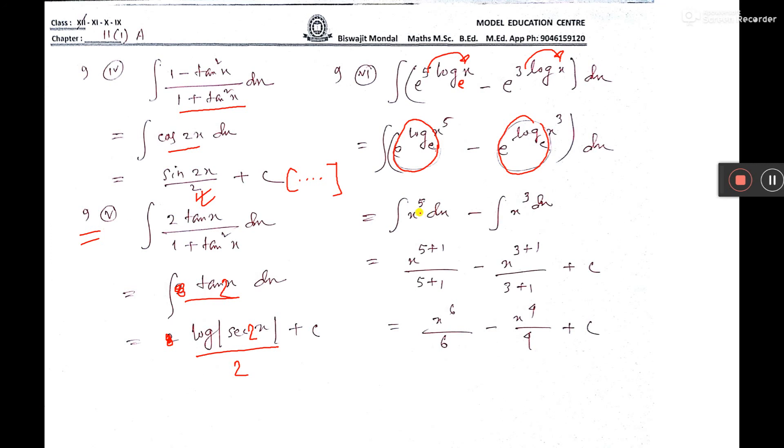Now, formula x to the power n. That is x to the power (n+1)/(n+1). Here also, x to the power (3+1)/(3+1). And this is the constant where c is indicating constant.